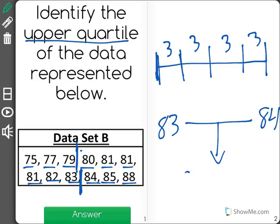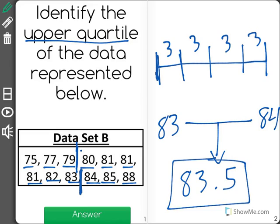And I get 83.5, which is the upper quartile in this data set.